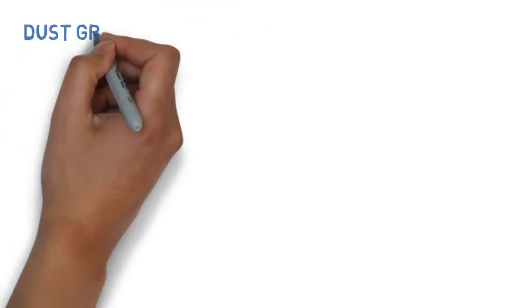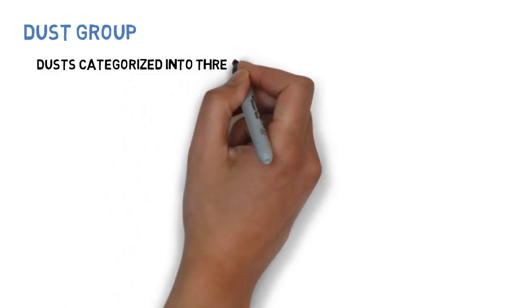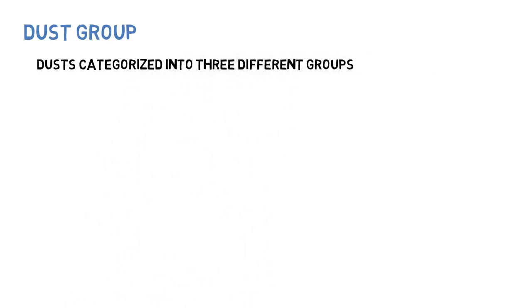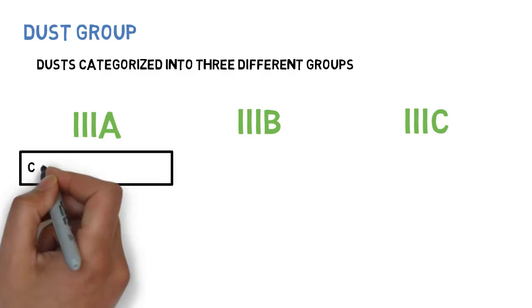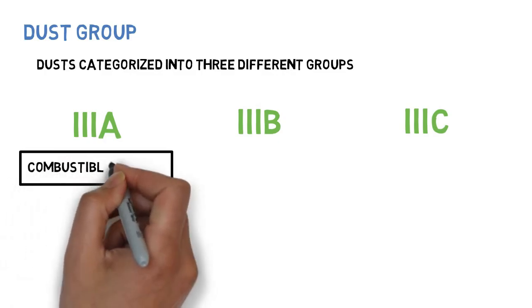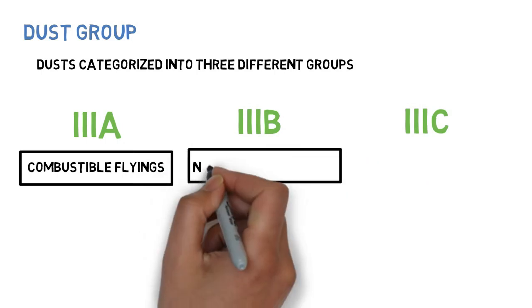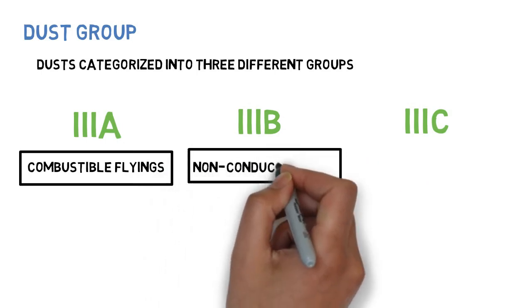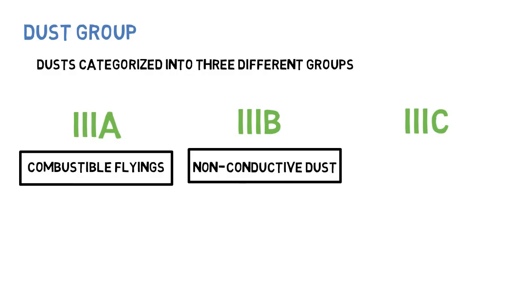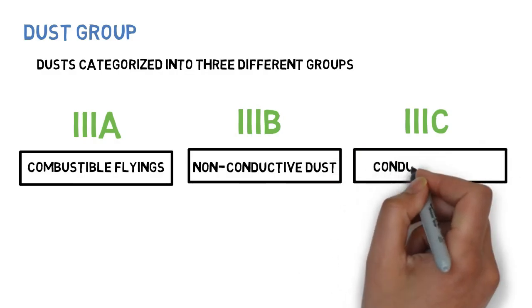Dust group. Dusts are categorized into three different groups: 3A, 3B, and 3C. 3A is for combustible flyings, 3B is for non-conductive dust, and 3C is for conductive dust.